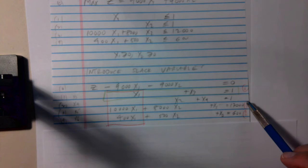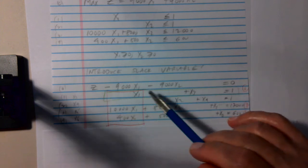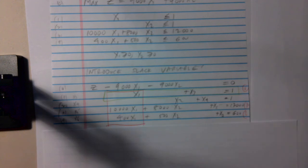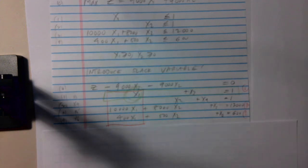And I look for the smallest ratio. So the ratios were 1, 6 fifths, and 3 halves. The smallest of these three numbers is 1. So I put, in this case, a green box around this equation. And this is my pivot.